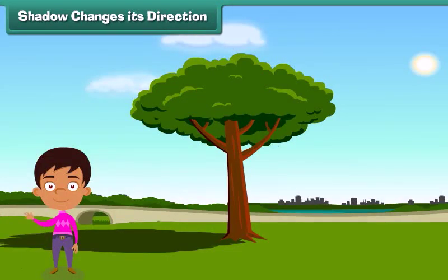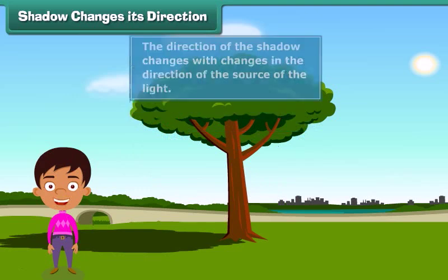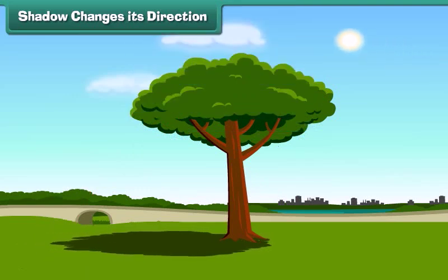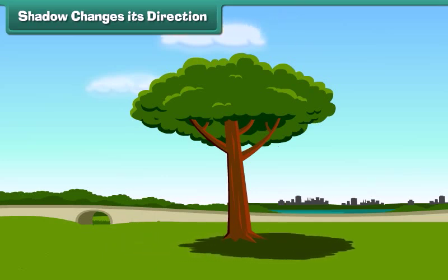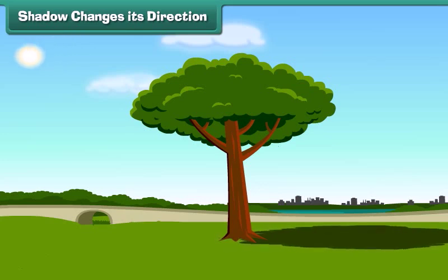You'll be surprised to know that the direction of the shadow changes with the changes in the direction of the source of the light. For example, the shadow of these trees changes as the sun moves from east to west during the day. Sometimes it becomes long and sometimes short. Let's see how this happens.